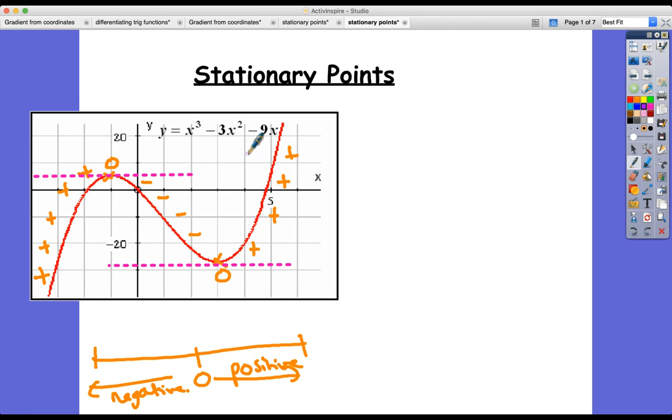We can do that using differentiation, so let's have a look. y equals the function we've got is x³ - 3x² - 9x. First of all, step one is to find the gradient function.